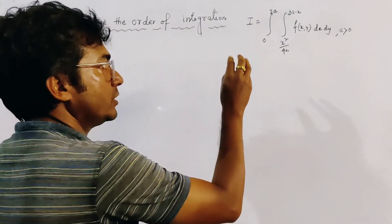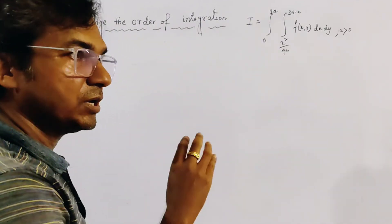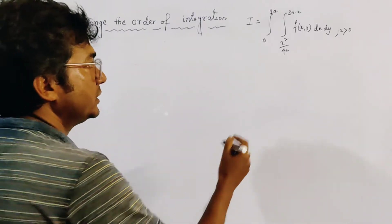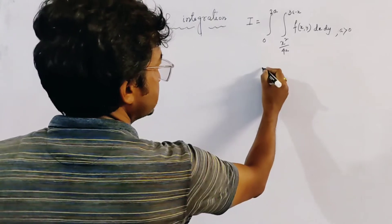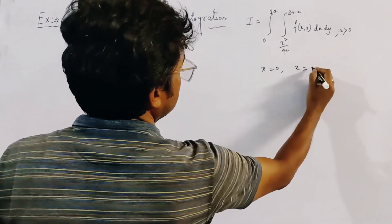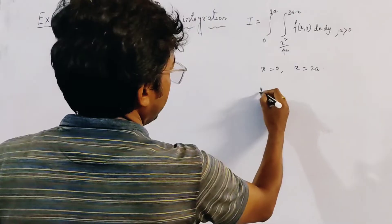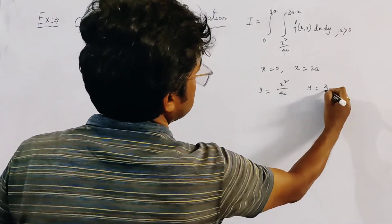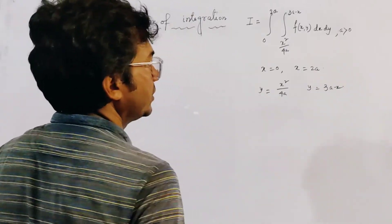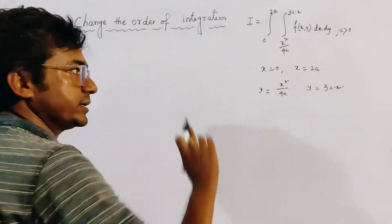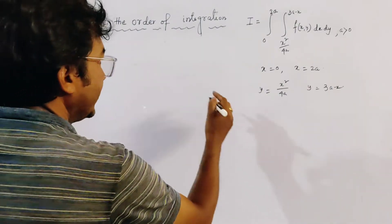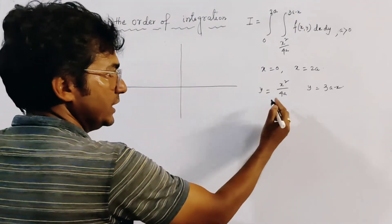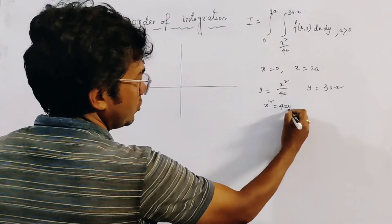We first graph the four figures roughly. The four figures are: x equal to 0, x equal to 2a, y equal to x squared by 4a, and y equal to 3a minus x. These represent the range of y and the range of x. Drawing the rough sketch, x squared equal to 4ay is a parabola with vertex at the origin with branch on the upper side.